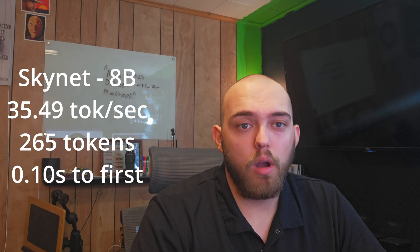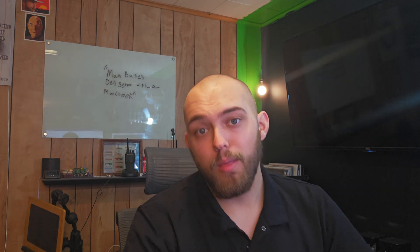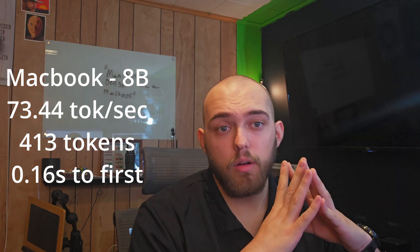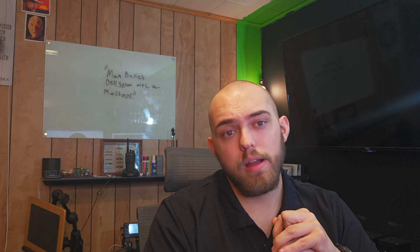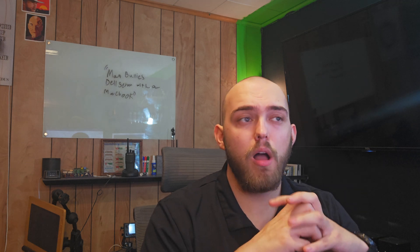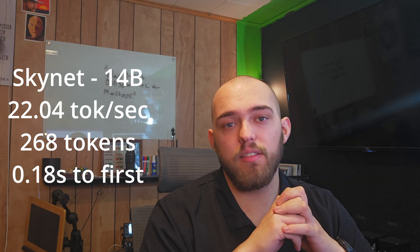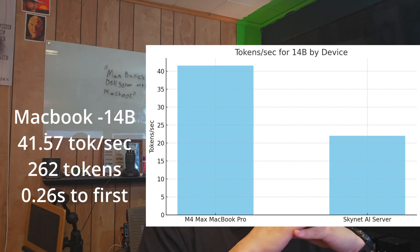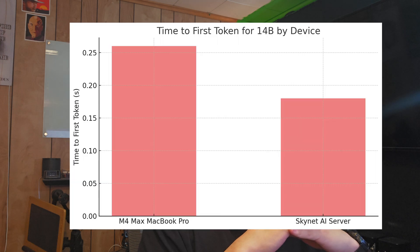What about the 8 billion parameter model on the Python prompt? On Skynet, 35.49 tokens a second, 265 tokens generated, and 0.10 seconds to the first token. On the MacBook, 73.44 tokens a second average, 413 tokens generated, and 0.16 seconds to the first token. Then Microsoft's PHI-4, the 14 billion parameter model — on Skynet, 22.04 tokens per second average, 268 tokens generated, and 0.18 seconds to first token. On the MacBook, 41.57 tokens per second average, 262 tokens generated, and 0.26 seconds to first token.